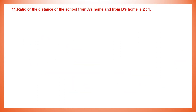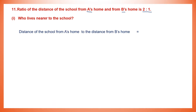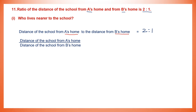Question 11. The ratio of the distance of the school from A's home to B's home is 2 is to 1. So we have two people, and we are talking about the distance of the school from their houses, and the ratio is 2 is to 1. The question is: who lives nearer to the school? Distance of the school from A's home to distance from B's home is given as 2 is to 1, which can be written as the fraction 2 by 1.